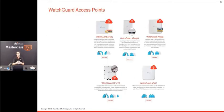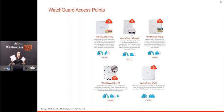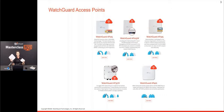Looking at the WatchGuard access point range, the AP125 and AP420 are very different in size and format, and that's due to what's inside them. The AP125 is a basic two-radio access point designed for small Wi-Fi networks with not a large number of clients. The AP420 is a much bigger device with 11 antennas, suited for conference room centres where you need many clients connected to a single access point.